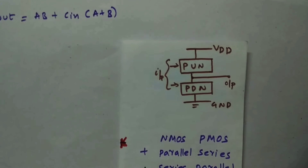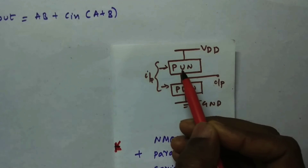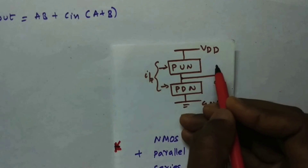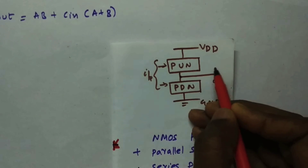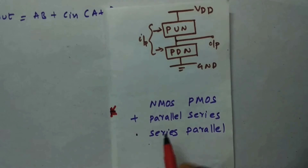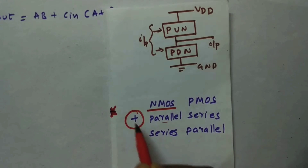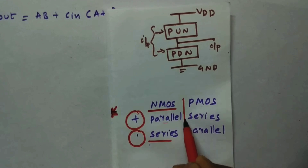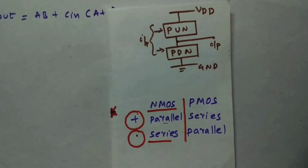Before going to Cout, let me cover some basics about CMOS. A CMOS circuit has a pull-up network consisting of PMOS and a pull-down network consisting of NMOS. The input will be complemented at the output — that's the main reason it's called Complementary MOS. For NMOS: parallel for OR (sum terms), series for AND (product terms). For PMOS it's the opposite: series for OR, parallel for AND.